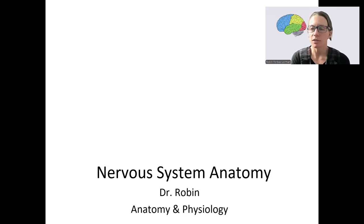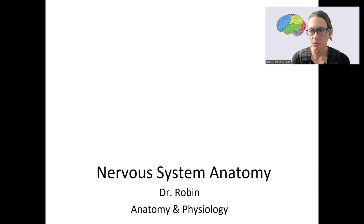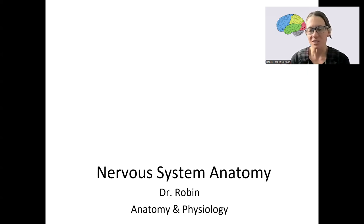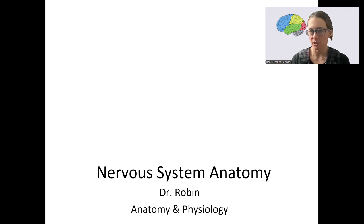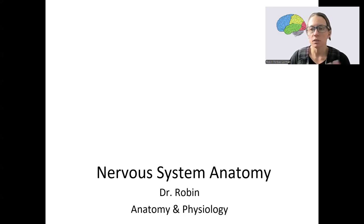So this week, we're going to talk just about nervous system anatomy, although we'll do a little bit of the function of some of these components. This is going to set us up to know a lot about the brain and spinal cord and peripheral nervous system, so we can talk about the somatic nervous system and autonomic nervous system, which are our last two units this semester. So really important stuff to be able to understand those units.